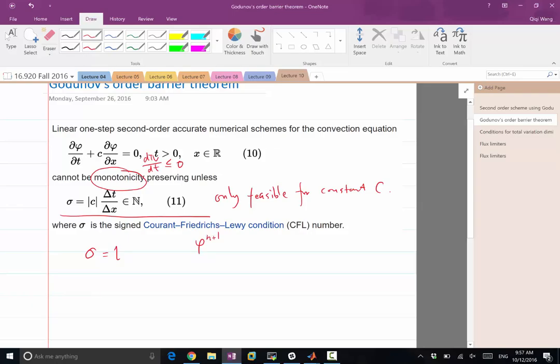Phi of n plus 1 using forward-Euler scheme, minus phi of i n divided by delta t plus C. And I'm using an upwinding scheme, for example,